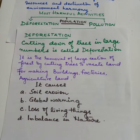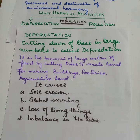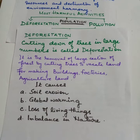Deforestation has caused many living things like birds and insects to lose their shelter and food source. Without food and shelter, plants and animals will die. As a result, they will become extinct just like the dodo — we have seen the dodo only in pictures. Similar cases can happen with the tiger, because the tiger is an endangered species.